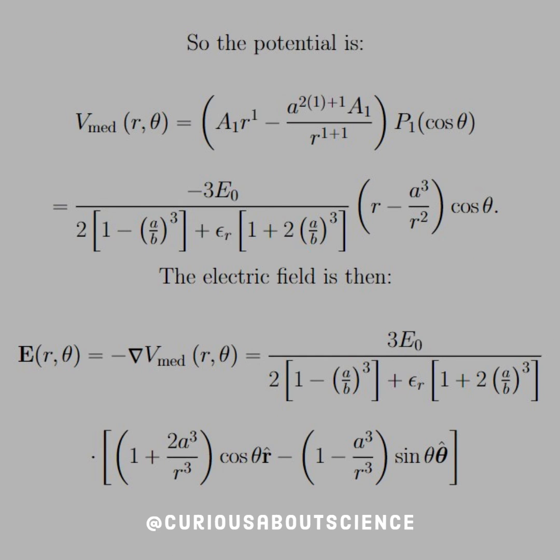We're not done yet though, this is only the coefficient. So now we need to substitute that coefficient into the potential term for our region. Let's recall that in the medium, we had an AL term and a BL term. But we found what that BL term was in terms of AL. So we substitute that in first, plug in one for all the L's that we have. And then we can factor out an A1 term and plug in the A1 term we just found on the previous slide. And we know that P1 is equal to cosine theta, so we can take that down.